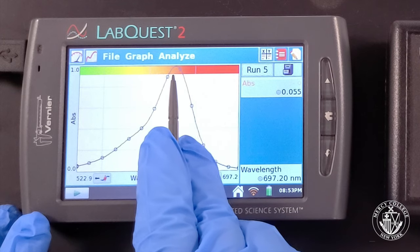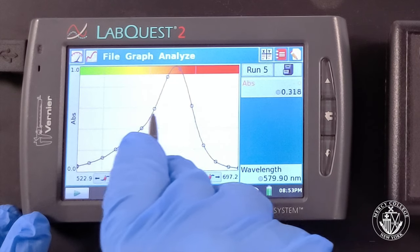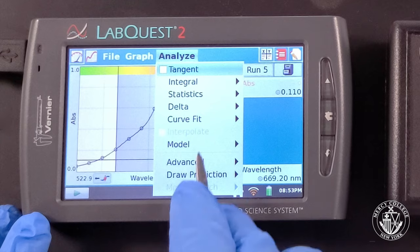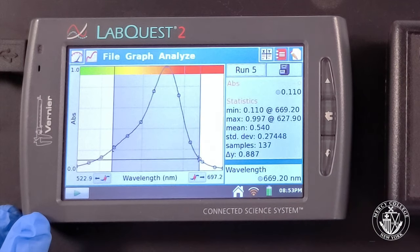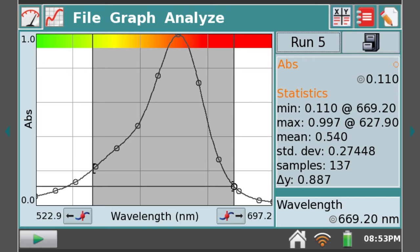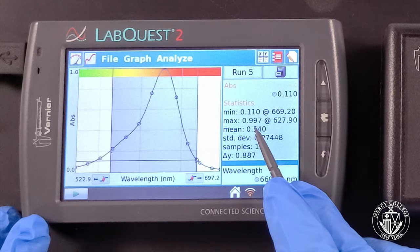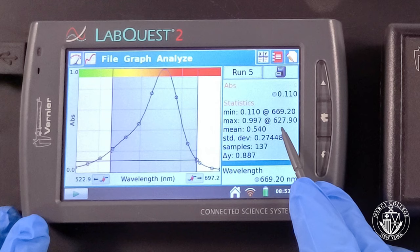This dye absorbs in the yellow-orange region of the spectrum. It appears to have an absorbance of 0.997 at a wavelength of 627.9 nanometers.